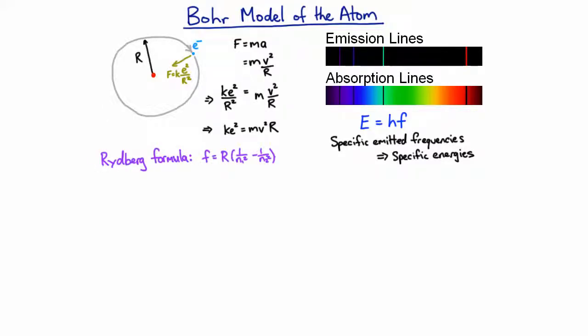If he restricted the product of m, v, and r, which for a circular orbit is known as the angular momentum, to be a multiple of h on 2 pi. And h on 2 pi is such a common number used in quantum mechanics that it's now called h-bar.